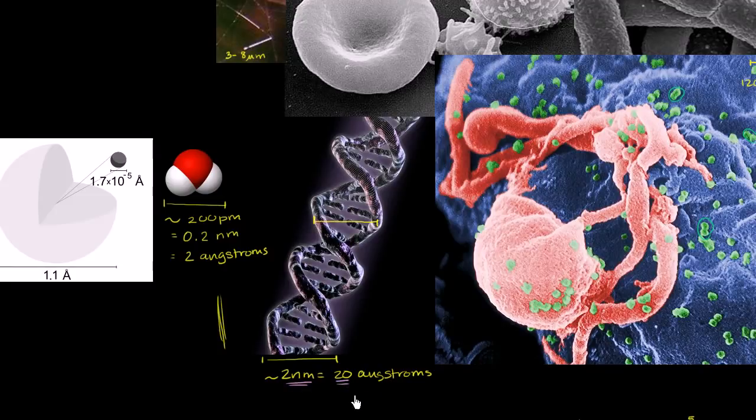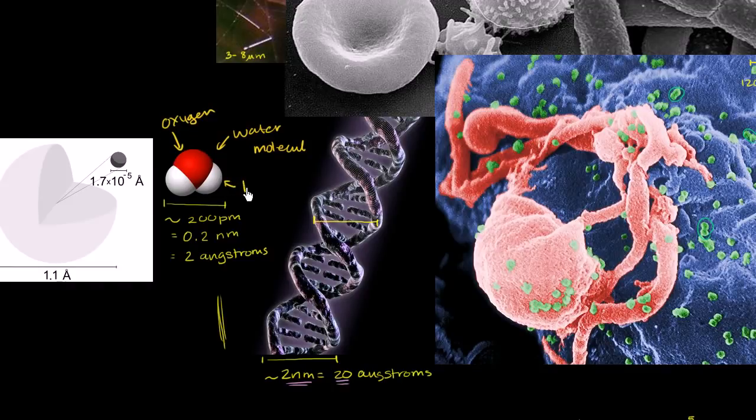Now, if we were to divide again by 10, you get to something that's 2 angstroms or 0.2 nanometers wide. And that is a water molecule. This right here is the oxygen, and it is bonded to the two hydrogens right over here.